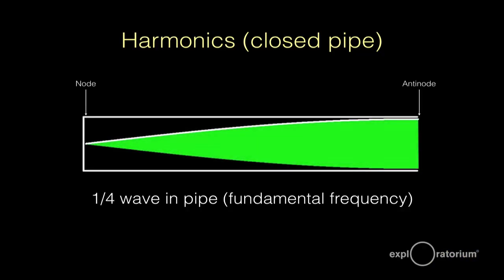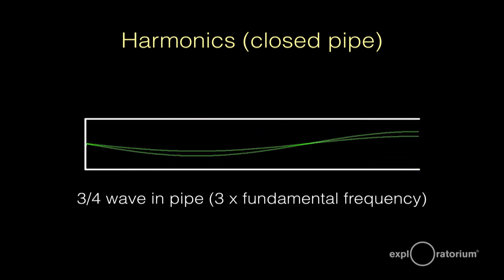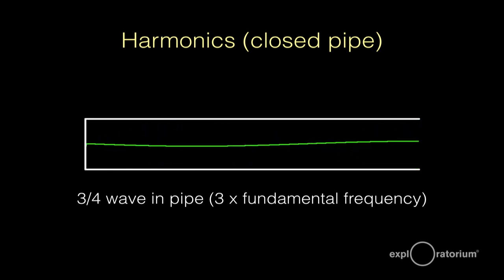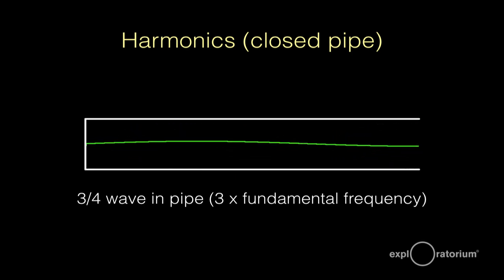If we are constrained to having an anti-node at the open end and a node at the closed end, we can fit another portion of a wave. Here again we have an anti-node at one end of the pipe and a node at the closed end of the pipe. Here's the next situation: we still have an anti-node at the open end and a node at the closed end, but now we have three quarters of the wave inside the pipe, whereas before we only had one quarter. So this is three times the fundamental — the lowest frequency that fits in that pipe.